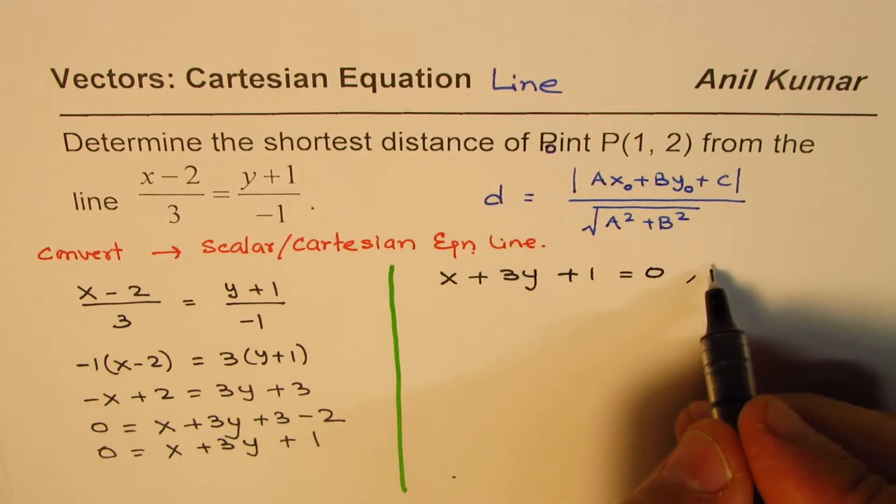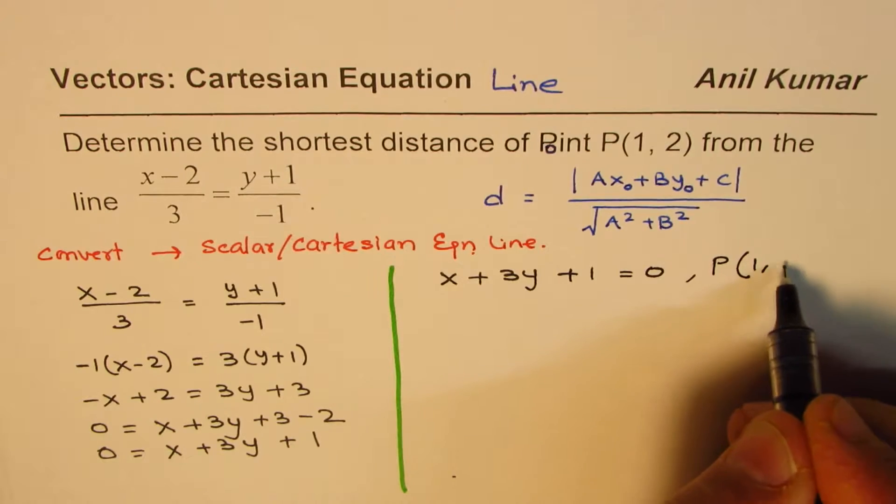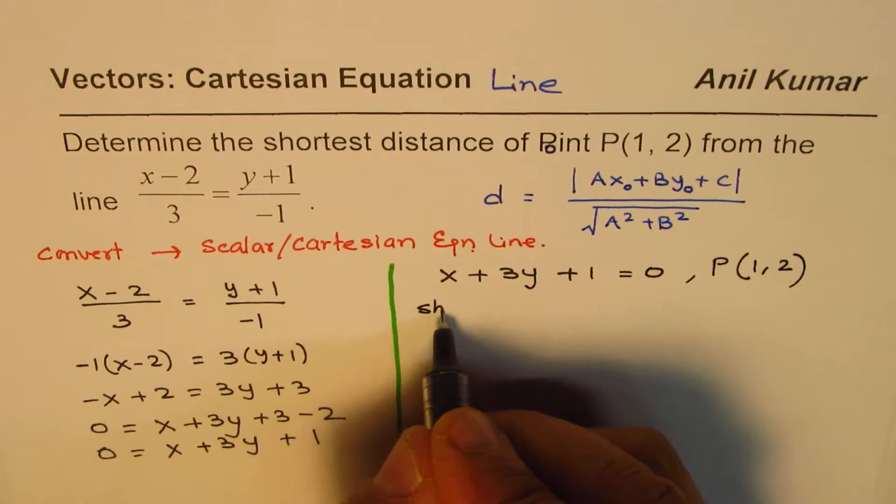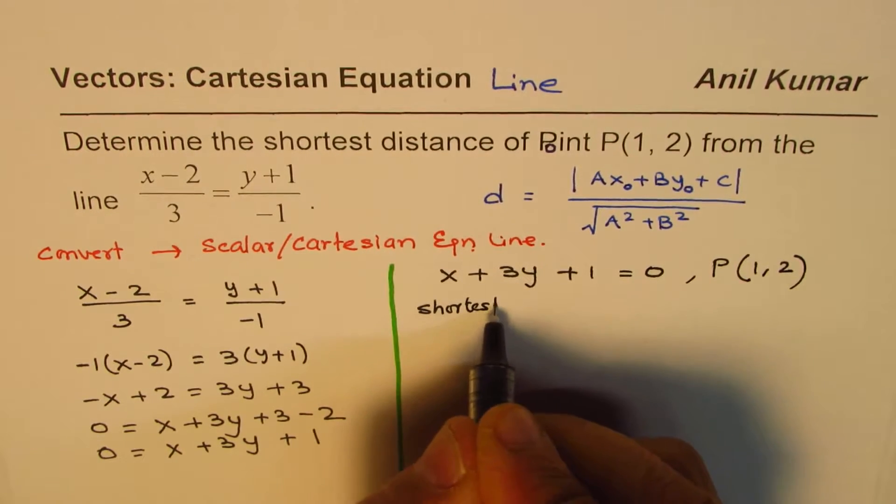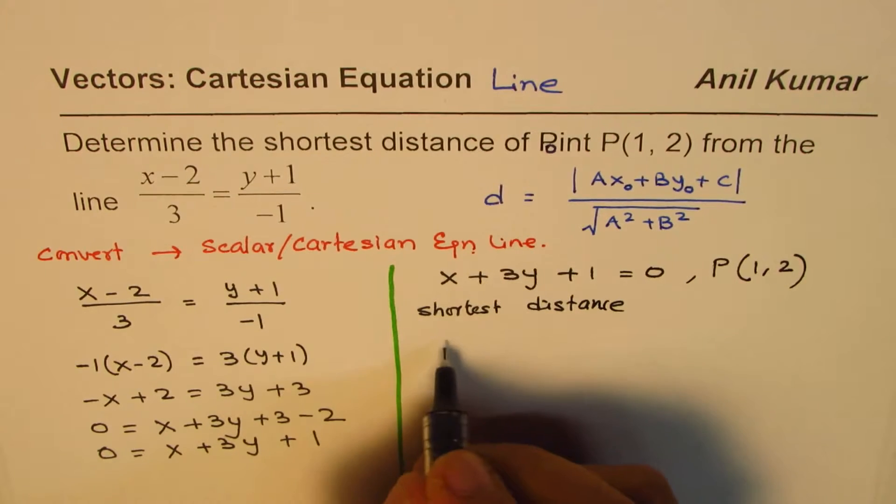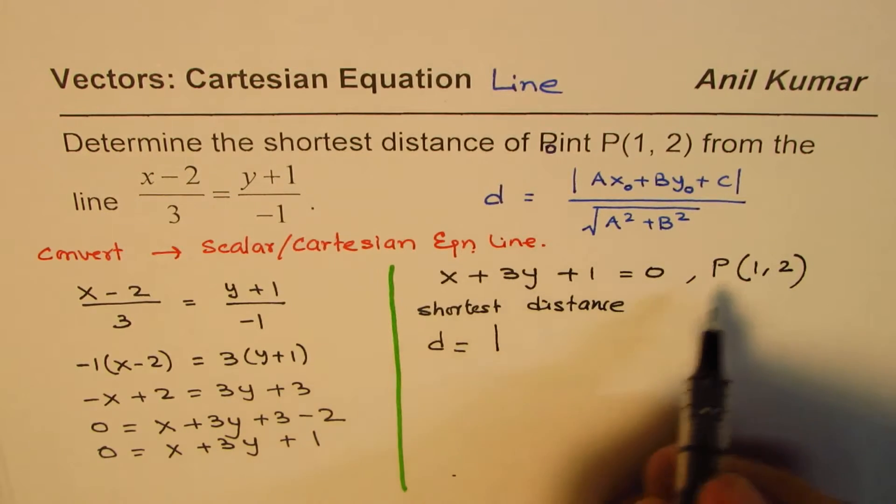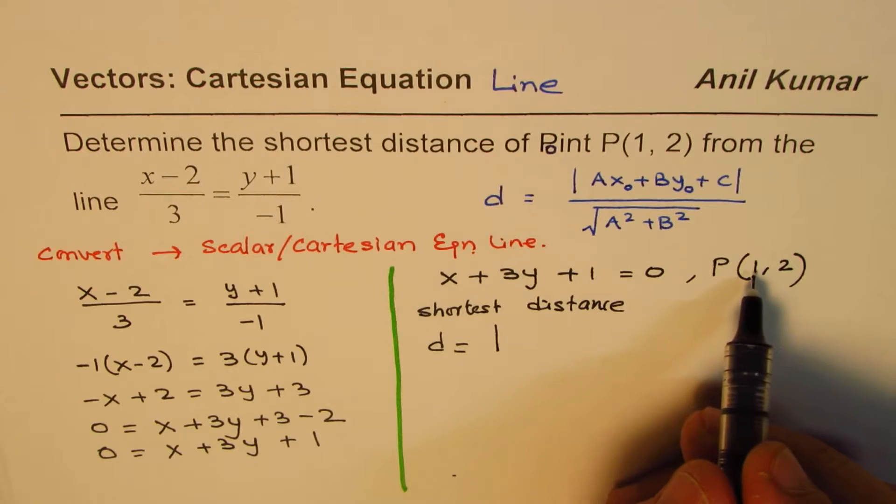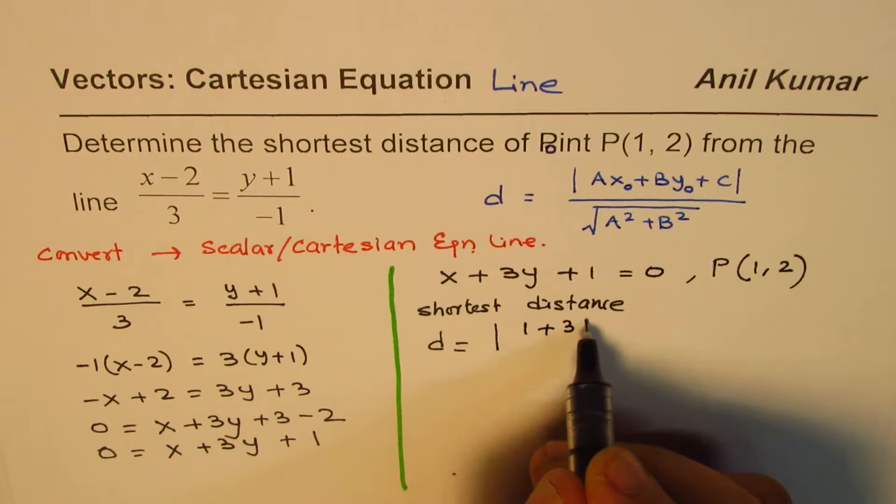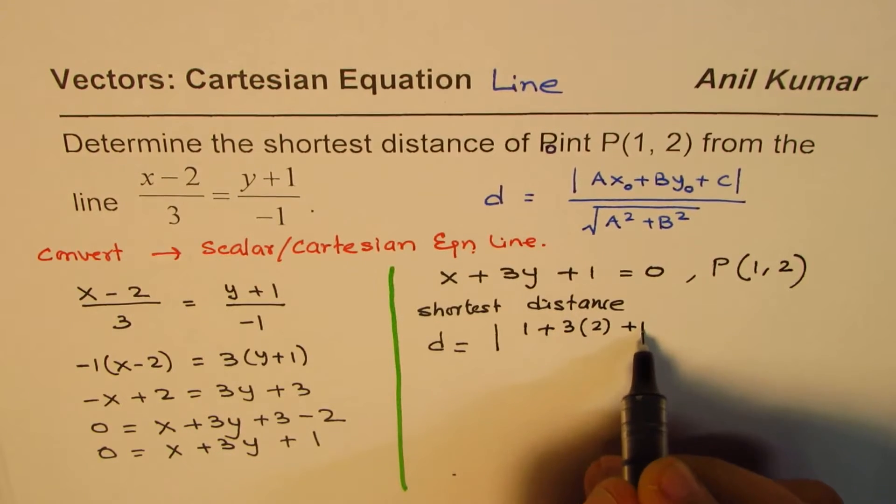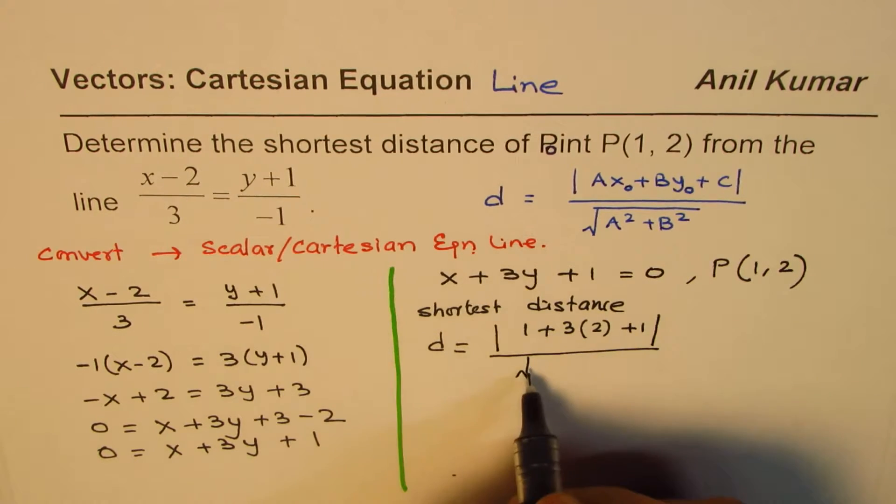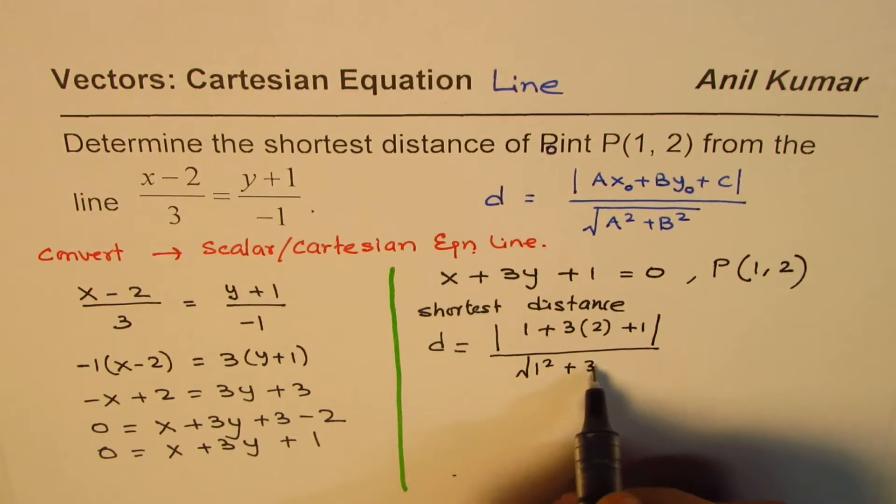And now we need to find the shortest distance from the point P, which is 1 comma 2. We can always apply this formula. So the shortest distance is d = absolute value of, we will substitute this point x₀, y₀ here. So x becomes 1 + 3(2) + 1, absolute value. Distance is always positive. Over a² is 1² + 3².